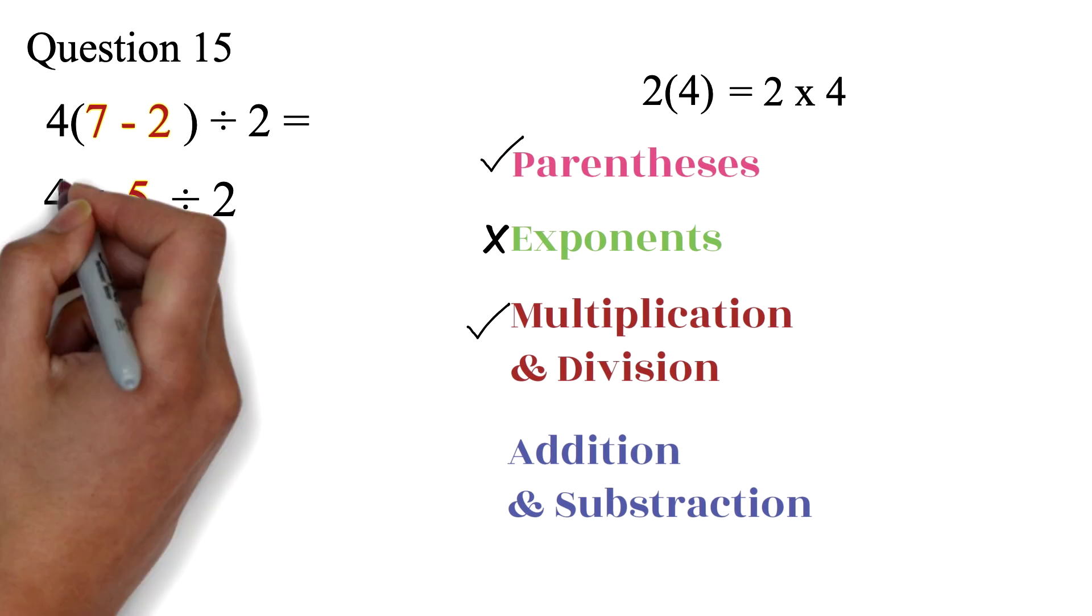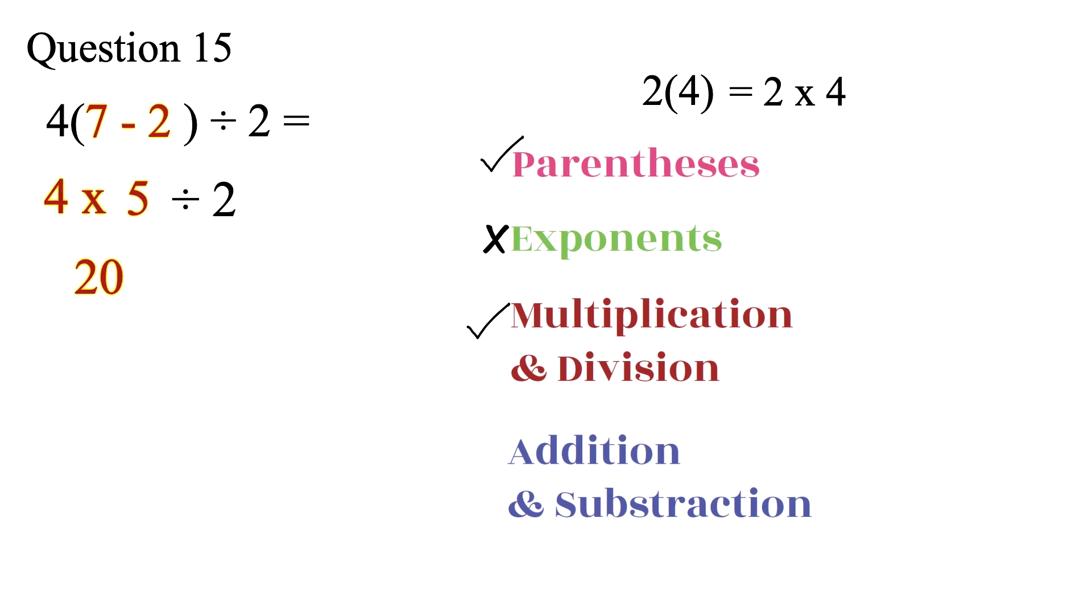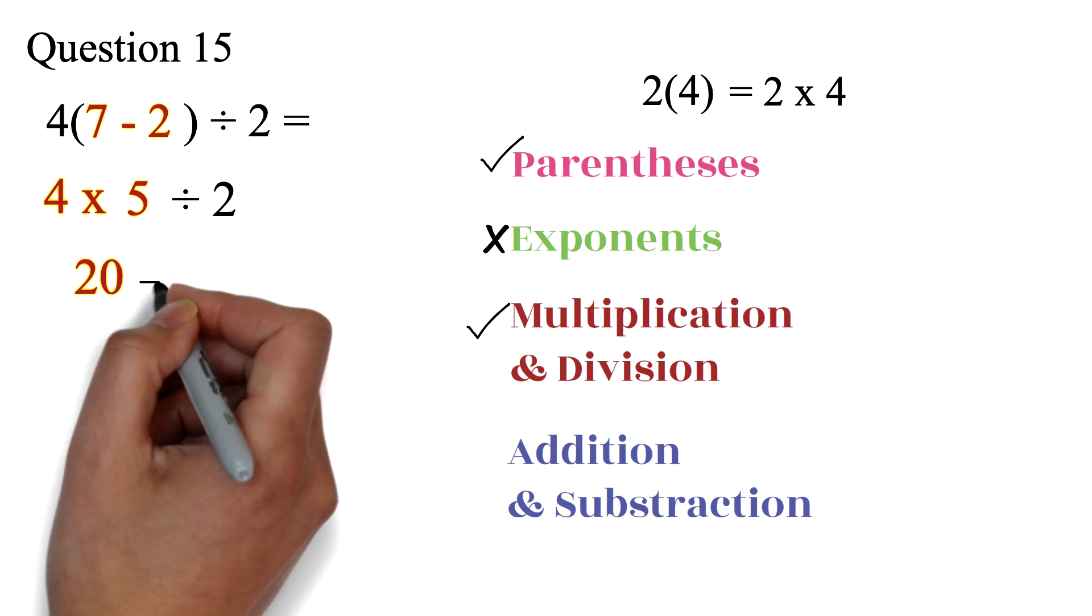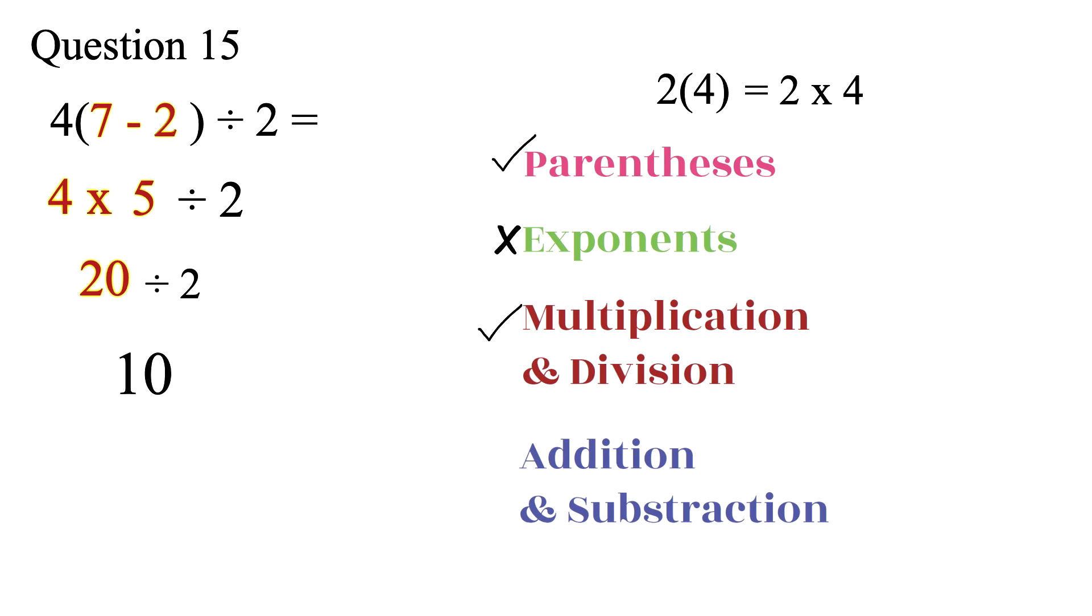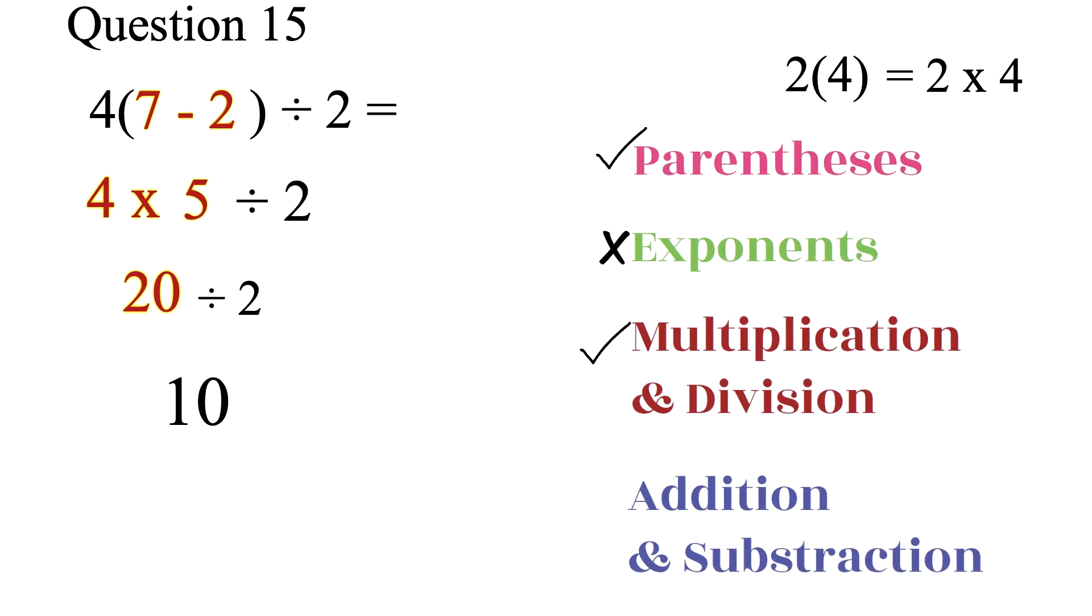So, we have 4 times 5, which is 20. Then, divided by 2. 20 divided by 2 is 10. Mastering the order of operation just requires practice. Let's look at more questions.